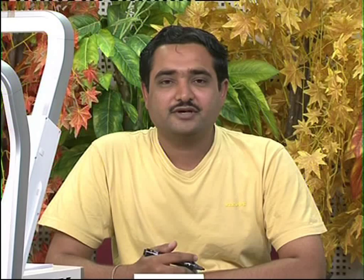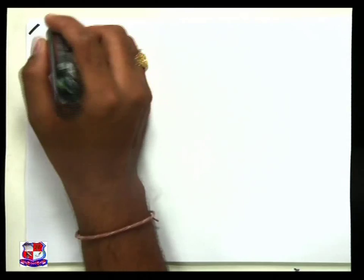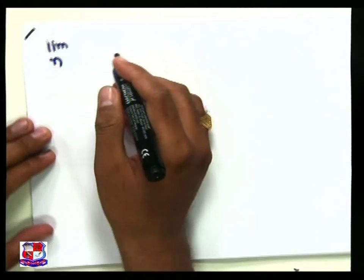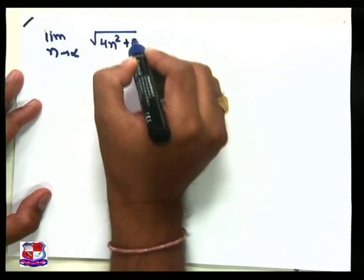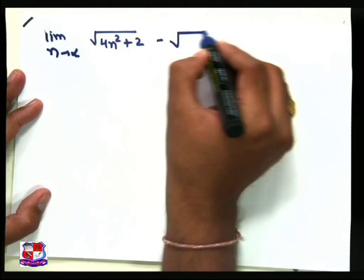Our next question is: limit n tends to infinite of [√(4n² + 2) − √(2n² − 1)] divided by (n + 3).